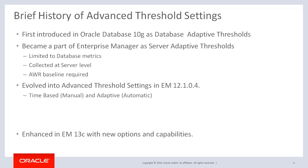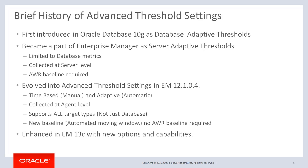In Enterprise Manager 12.1.0.4, the feature evolved into advanced threshold settings, introducing two threshold options: time-based static and adaptive. This was further enhanced in 13C with new options and capabilities. In the new settings, sampling is now done at the agent level instead of the server level, which means it is open to all targets, not just database metrics. We also have a new baseline approach, so AWR baseline is no longer required.